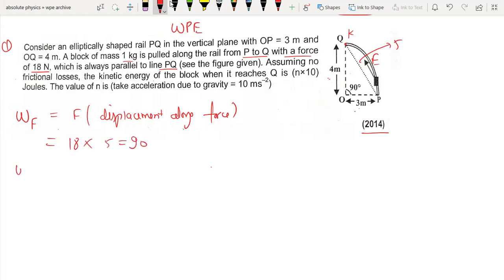Now for work done by gravity. Gravity does negative work, so minus mg times h, which is minus 1 times 10 times 4, equals minus 40 joules. Together the two forces contribute.